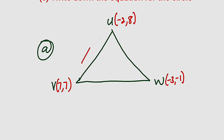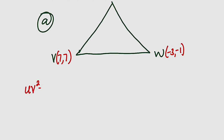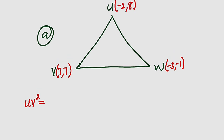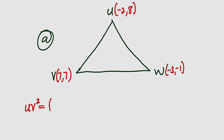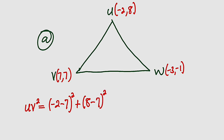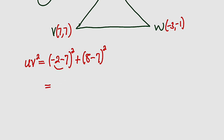We are going to apply the distance formula to find the length of these three sides. Starting with UV: UV² = (x₂ - x₁)² + (y₂ - y₁)². Substituting directly: (-2 - 7)² + (8 - 7)² = (-9)² + (1)² = 81 + 1 = 82. Therefore UV² = 82.